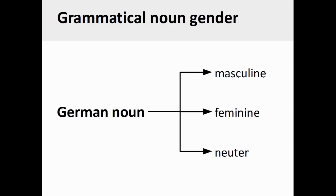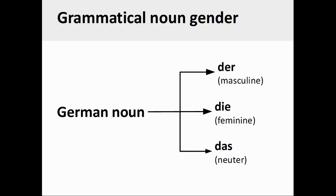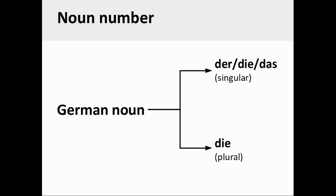Now, how do we use these personal pronouns to refer to nouns? You will recall from our earlier presentation on German nouns and definite articles that German nouns have a grammatical gender — they are either masculine, feminine, or neuter. You will also recall that the grammatical gender of a German noun determines its definite article: masculine nouns have the definite article der, feminine nouns have die, and neuter nouns have das. Finally, plural German nouns do not manifest any gender and their definite article is always die.